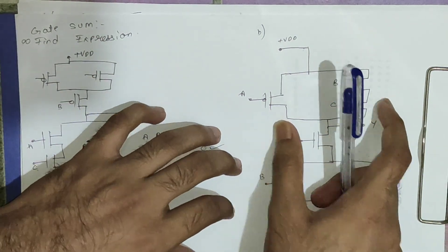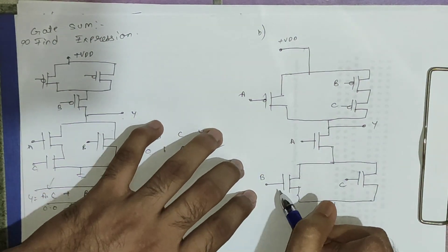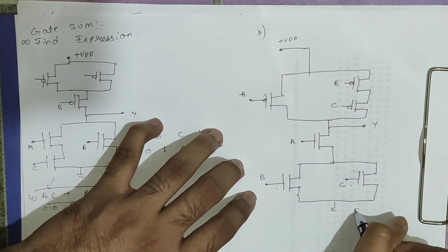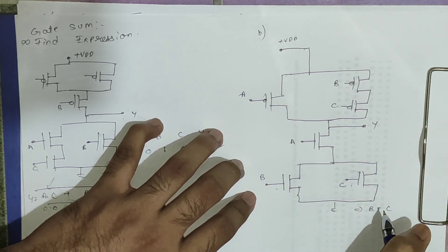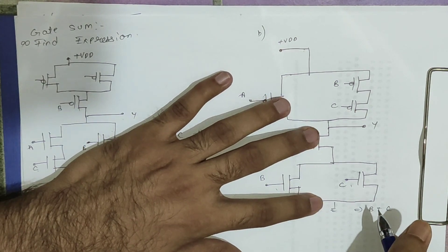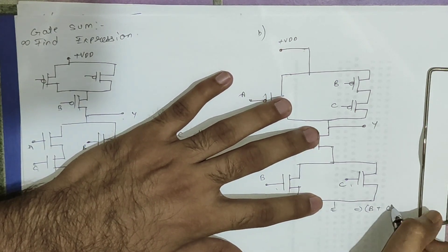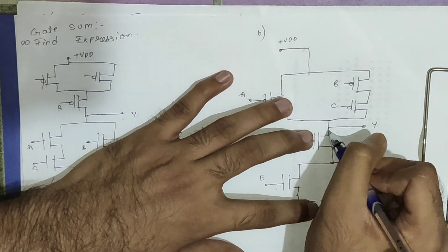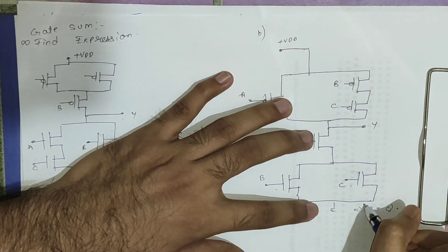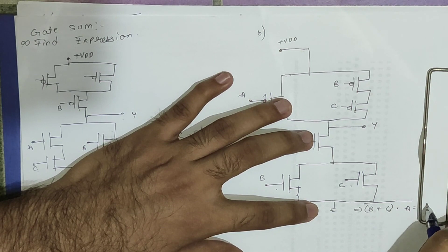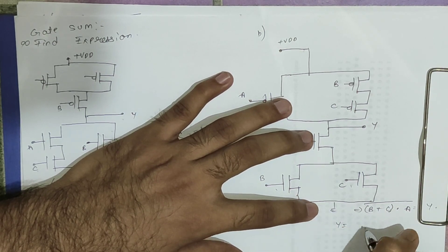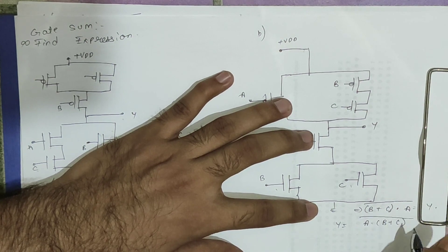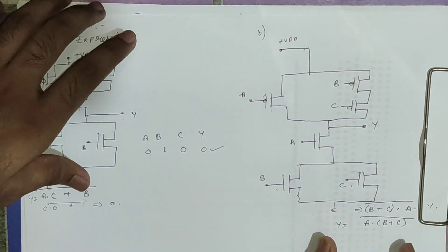For the second circuit, we need to find the expression. B and C are connected in parallel, giving B+C. This branch is connected in series with A, giving A·(B+C). Since the output is taken from the drain, we get the complement at output, so the expression is (A·(B+C)) bar.